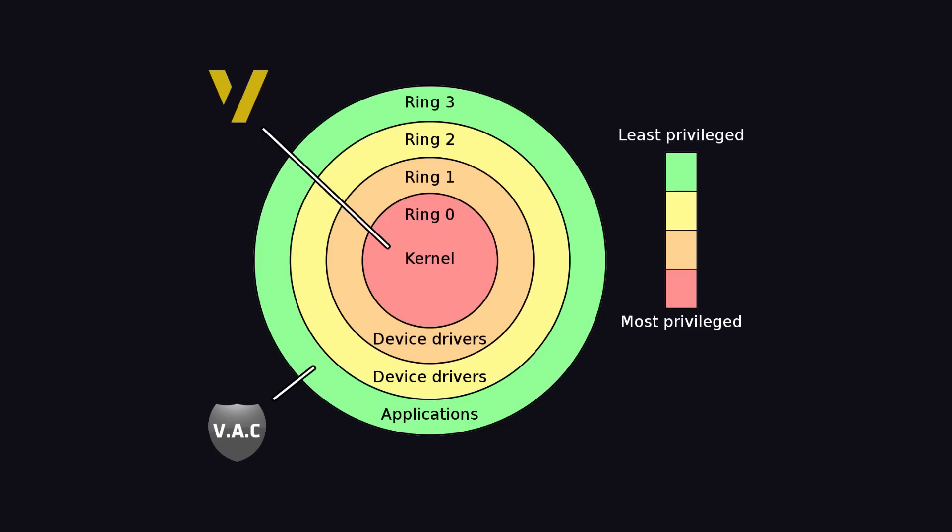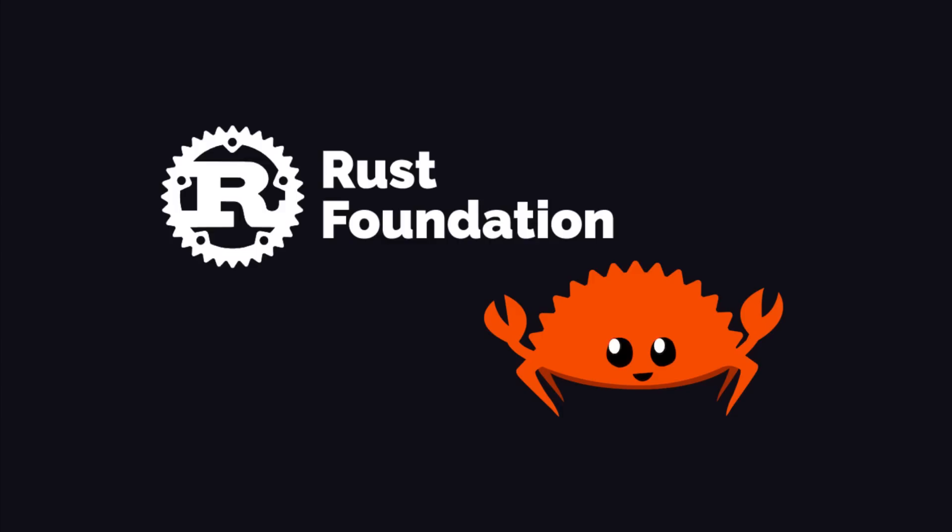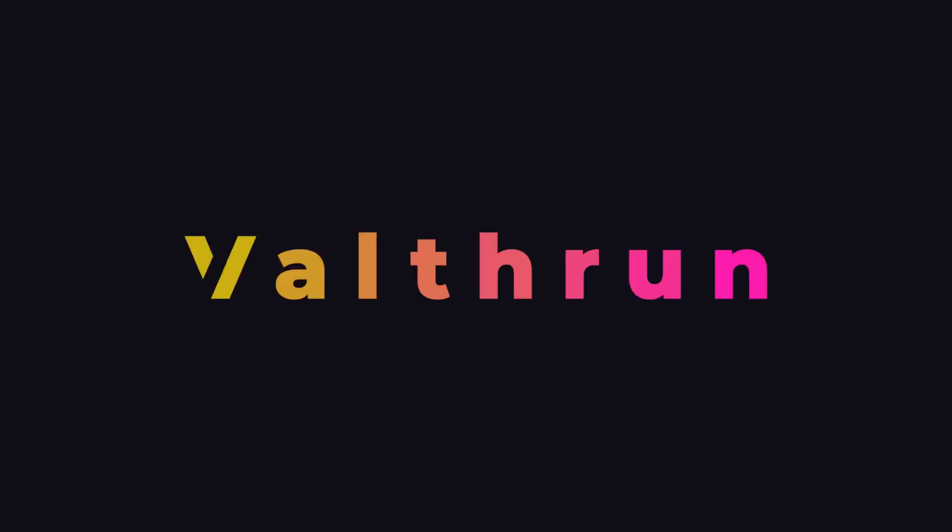Kernel indicates that it doesn't use any user-level Win APIs to get information from the CS2 process. Additionally, ValthRun is programmed in the Rust programming language, which is designed to be memory safe.